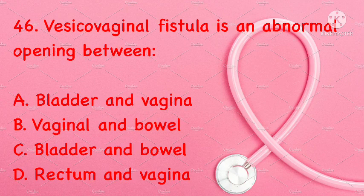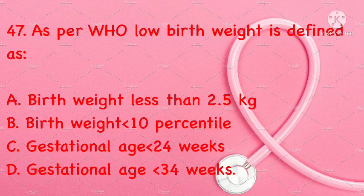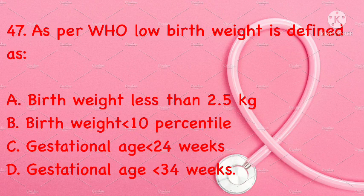Vesico-vaginal fistula is an abnormal opening between: bladder and vagina, vagina and bowel, bladder and bowel, or rectum and vagina. Correct answer is A: bladder and vagina.